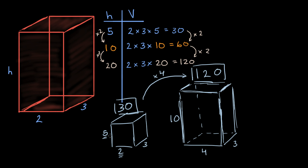In general, if you double all the dimensions, what does that do to the volume? Or if you halve all of the dimensions, what does that do to the volume?